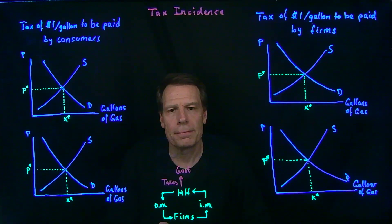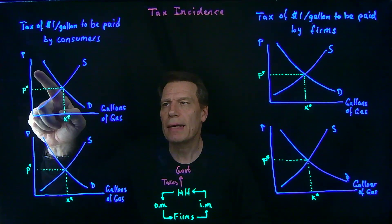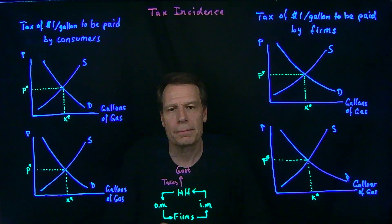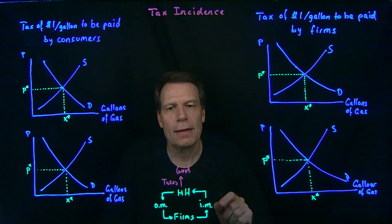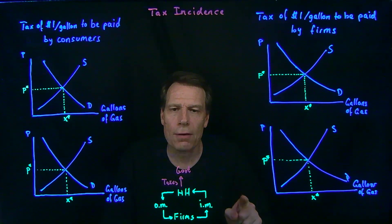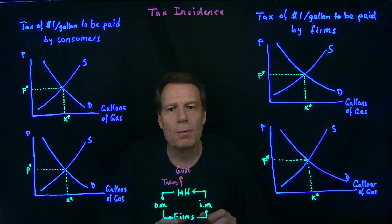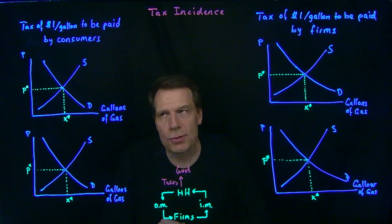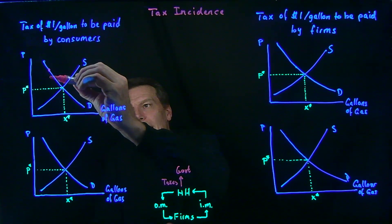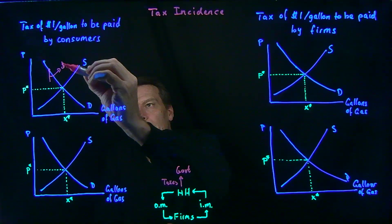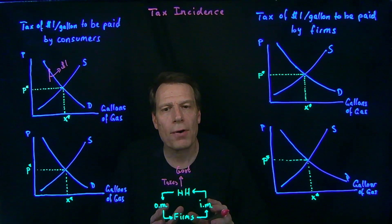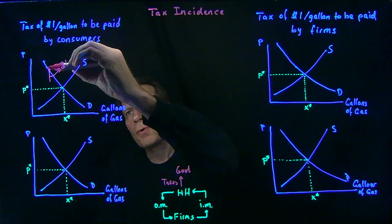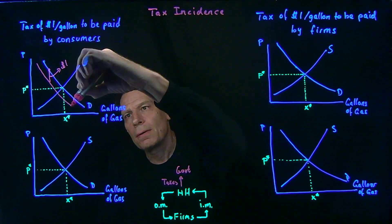What about the demand curve? Think about a consumer who was willing to pay a certain price for the last gallon of gas that they bought. Would that consumer still be willing to pay that same price for that gallon of gasoline if they knew they still owed $1 to the government? The answer is no — they'd be willing to pay $1 less, because once they've paid the $1 to the government, the price is back up to what they were originally willing to pay. So this point on the demand curve is going to shift down by $1, and that's going to be true for every other point — so the whole demand curve shifts down by $1.